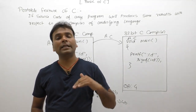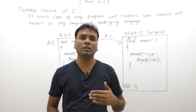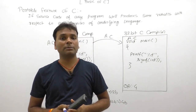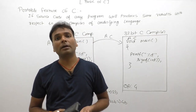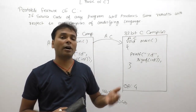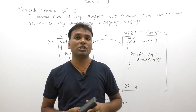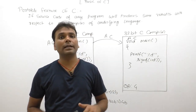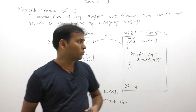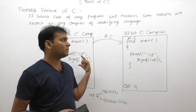Since the two compilers give different results for the same source code, C is not considered portable in this case. Therefore, we cannot say C is a 100% portable language. There are multiple examples available that demonstrate different behavior of C with respect to different compilers.